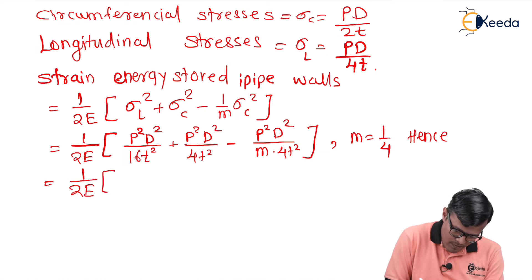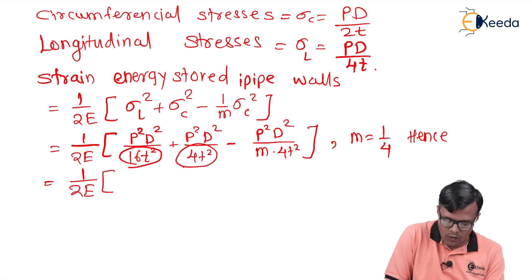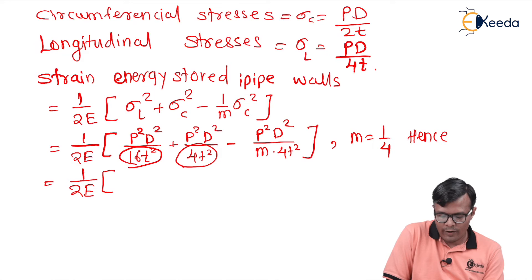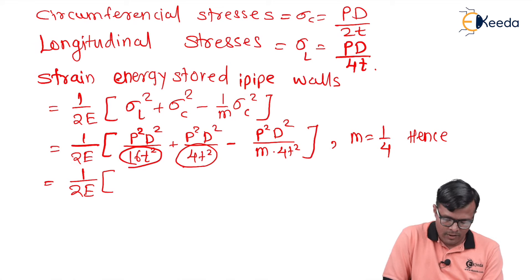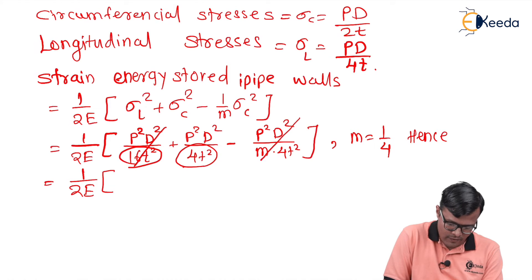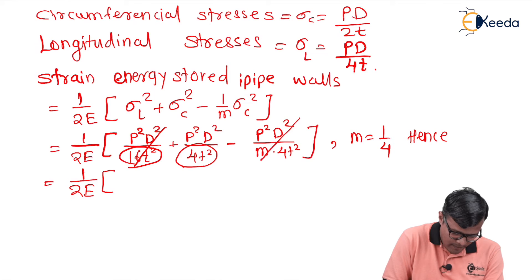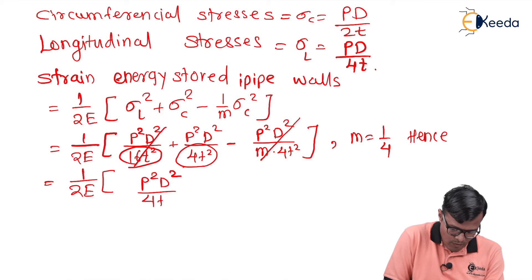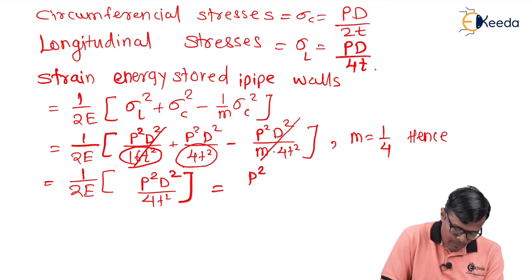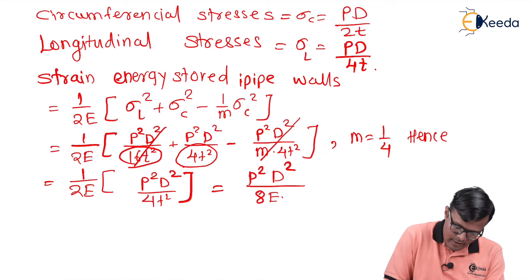Substituting m = 4 (since mu = 1/4), the denominators become 16, 16 for the first two terms and 16 for the third. The 16s cancel, and the remaining term gives strain energy per unit volume = p²d² / (8E × t²).